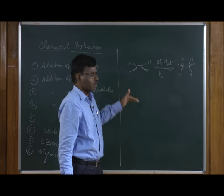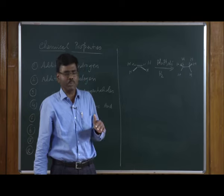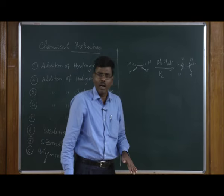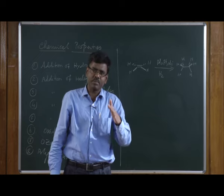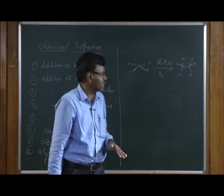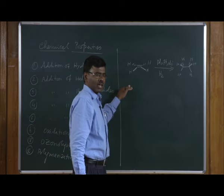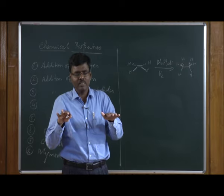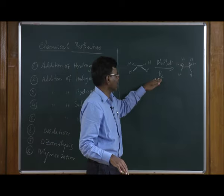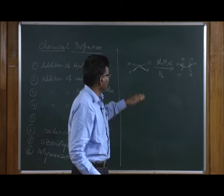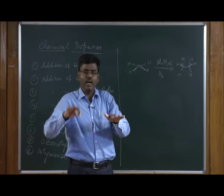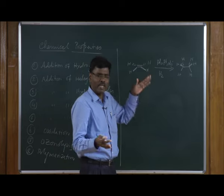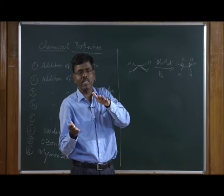This reaction is stereospecific. Both hydrogen atoms come from the same side of the alkene — it can be the bottom side or top side. What happens is: the metal surface first adsorbs the hydrogen, then the alkene is also adsorbed on the metal surface where the carbon-carbon double bond interacts with the metal.